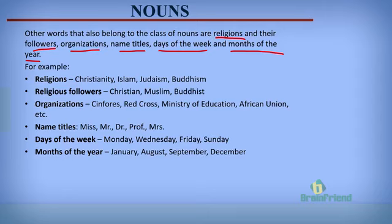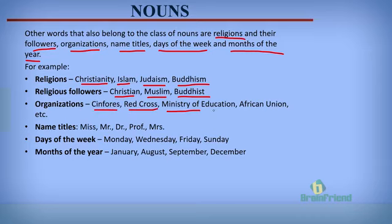For example, for religions, we have Christianity, Islam, Judaism, Buddhism, and so on. Religions are known as nouns. Religious followers, for example, Christian, Muslim, Buddhist. For organizations, we have Red Cross, Ministry of Education, African Union, and so on.